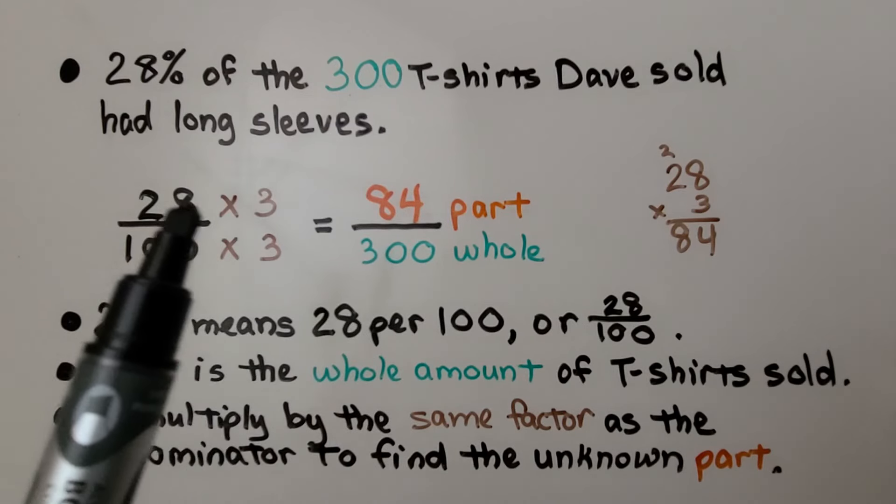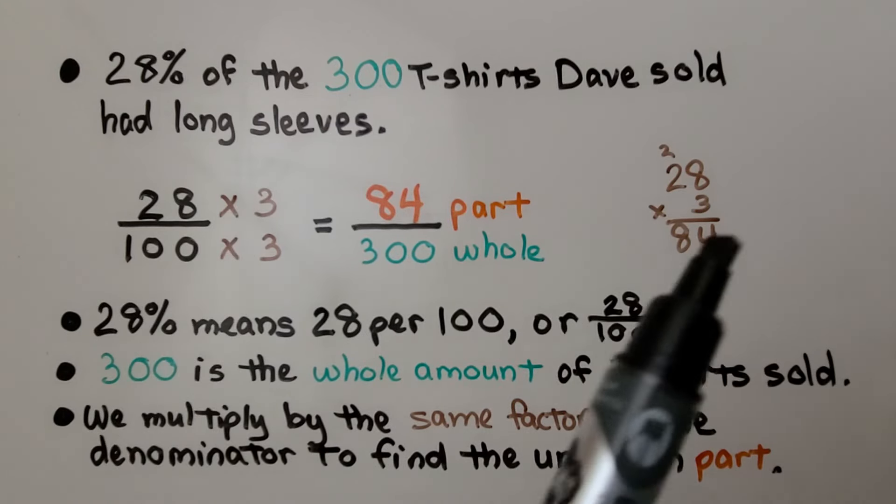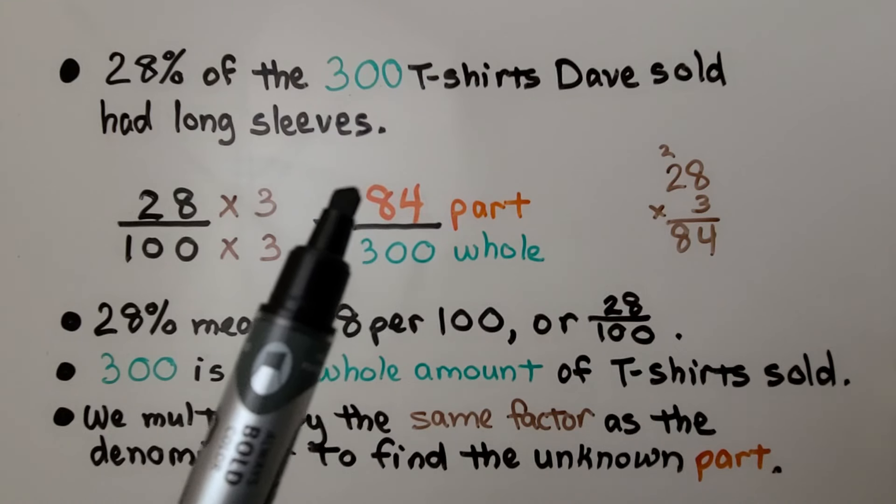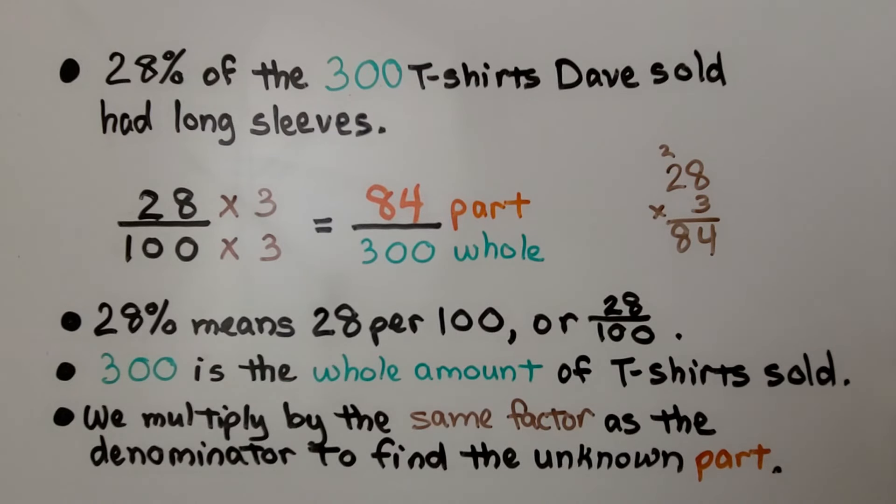We need to multiply the numerator by the same thing, and we find out that that's 84. 300 is the whole amount of the t-shirts sold. It's of 300 t-shirts that he sold. We multiply by the same factor as the denominator to find the unknown part.